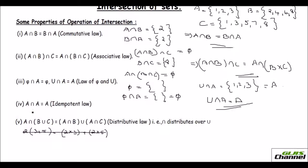The fourth one is A intersection A is A only — this is the idempotent law. A intersection A: what is common in A and A? It is 1, 2, 3 only, which is nothing but A. So A intersection A equals A, and that is proved too.